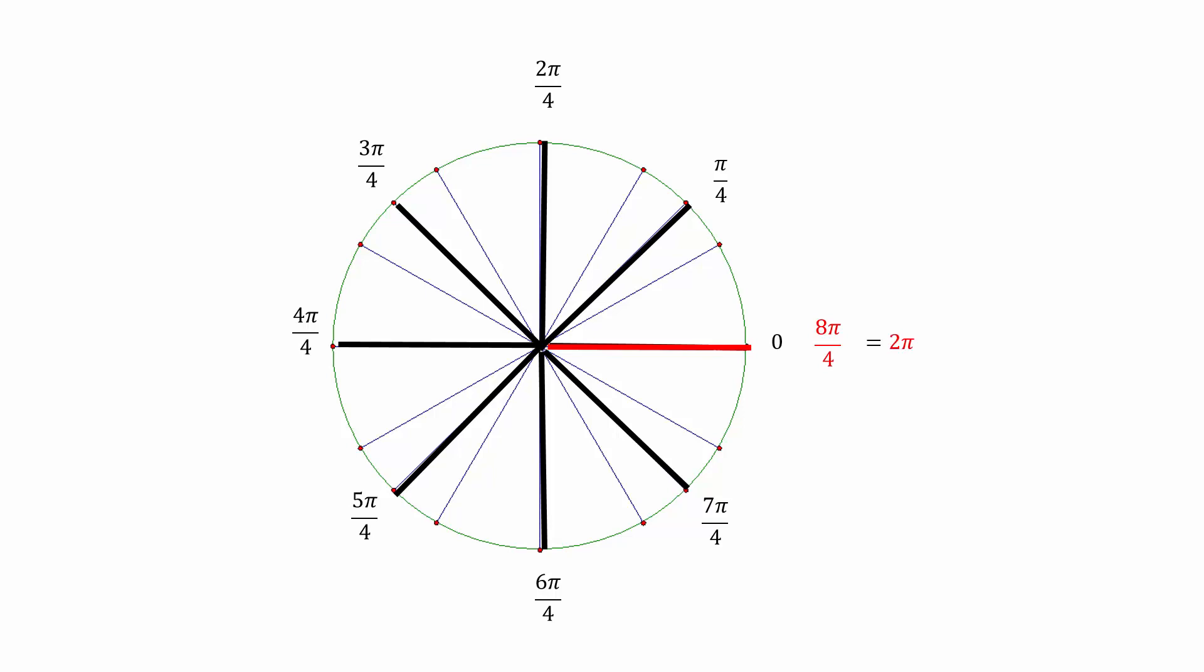Of course this will reduce to be 2 pi. 2 pi over 4 will also reduce to be pi over 2. 4 pi over 4 will reduce to be pi, and 6 pi over 4 will reduce to be 3 pi over 2.